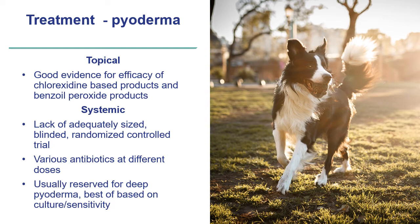Treating bacterial pyoderma is based first on topical therapy, which is highly recommended as the first line. There is good evidence for the efficacy of chlorhexidine-based and benzoyl peroxide-based products. When topical therapy is less effective due to deep pyoderma, systemic treatment should be considered, noting there is currently a lack of adequately sized, blinded, randomised controlled trials comparing various antibiotics. Antibiotics should be chosen based on culture and sensitivity results, and systemic antibiotics should be reserved for deep rather than surface or superficial pyoderma.